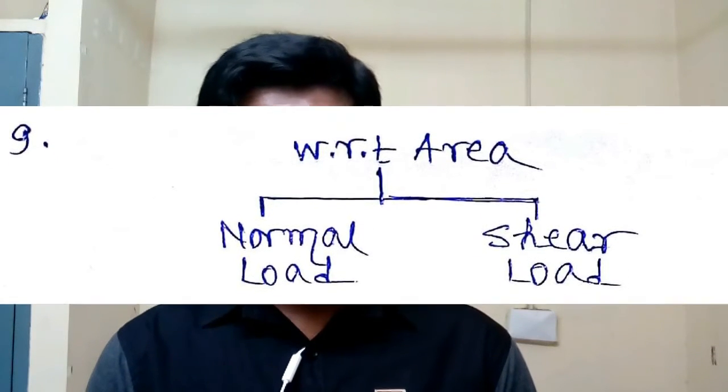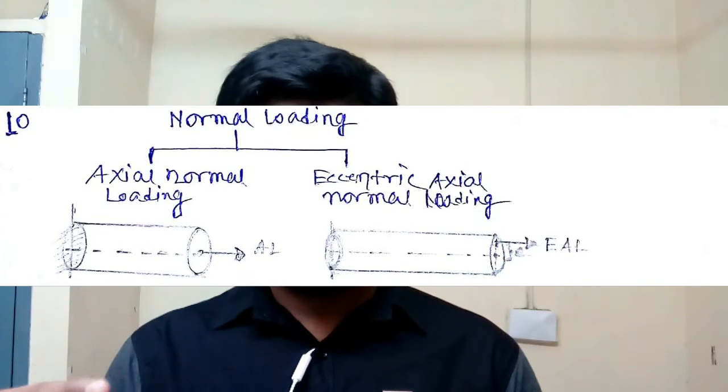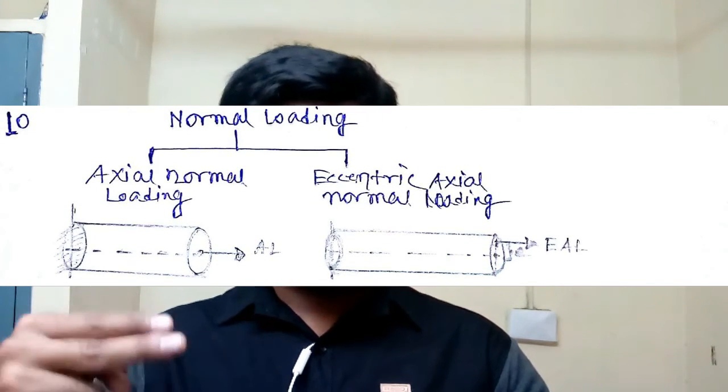Now distinguishing load with respect to the cross section of the member: the first category is normal loading, when the load acts along the longitudinal axis of the member and perpendicular to the cross section. Within normal loading, if the load acts exactly along the longitudinal axis it is axial normal loading, but if the load acts parallel to the longitudinal axis but not at the center, that is called eccentric axial loading or eccentric normal loading, and its effect is different from pure axial loading.